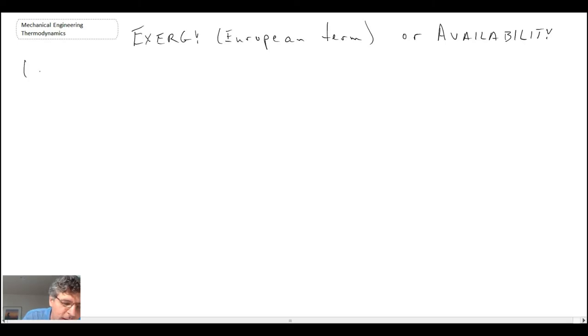The concept of exergy itself is a European term that was derived in the 1950s. And it was actually preceded by a term that was coined at MIT called availability. So if you look in some thermodynamics textbooks, you may find them discussing availability and not exergy. But just be aware that they are the same thing, the same concept. And the MIT term was coined in probably about the 1940s.